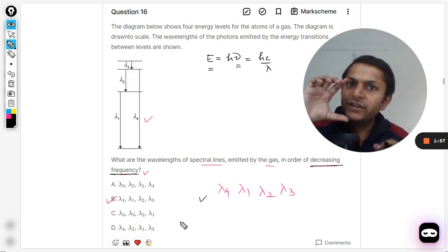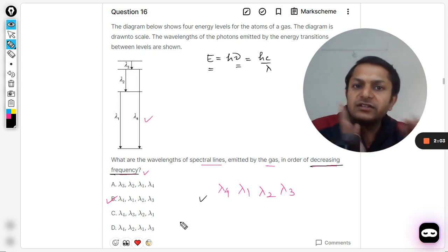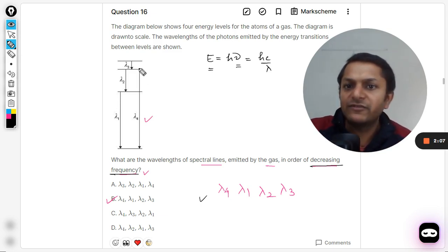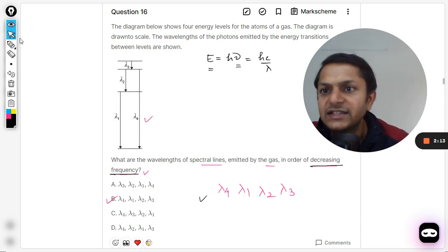The energy gap is giving you the total change in energy, and that is directly related with the frequency. Decreasing order of frequency means decreasing order of energy. We have just seen the diagram - which energy is big, which energy is lesser, arranged it accordingly. So the answer is B. Let us see the mark scheme.